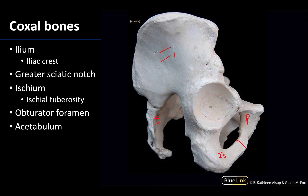Reviewing a few things from the previous slide: here is your iliac crest and your obturator foramen — we can only see one here, with a little bit poking through. There are a few other things we can see better on this lateral view.